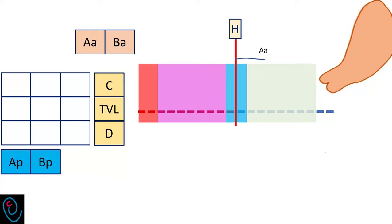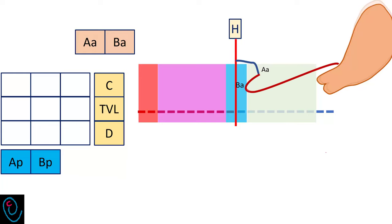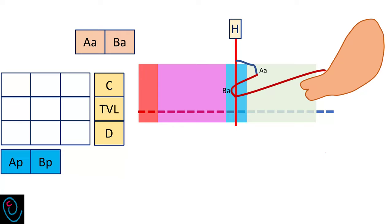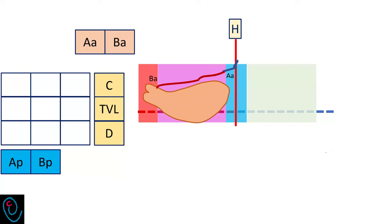The remaining part of the anterior vaginal wall is assessed by point B anterior, which is normally present 3 cm before the hymen — minus 3 cm. But it could descend to any area in stage 1, stage 2, stage 3, or even stage 4.